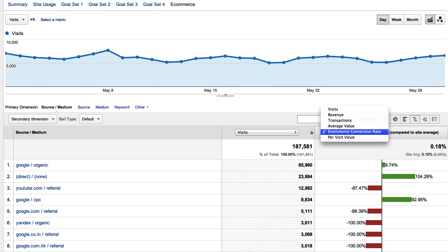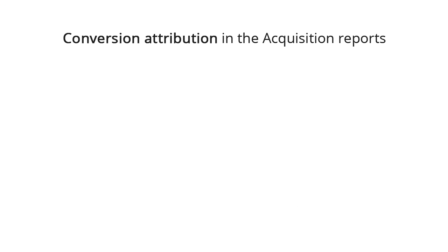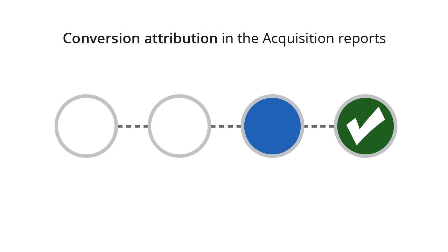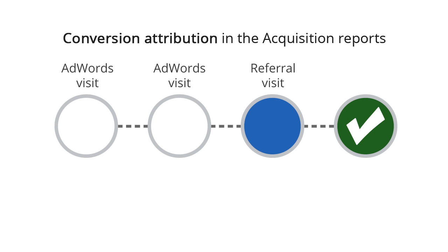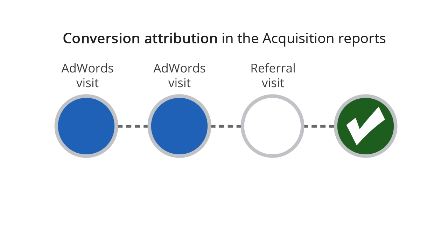In this case, we're looking at metrics on the e-commerce tab and comparing each traffic source's e-commerce conversion rate with the site average. Remember, by default, Google Analytics attributes a conversion or sale to the campaign that most recently preceded the conversion. For example, if a visitor clicks on an AdWords ad and then later returns via a referral to purchase something, the referral will get the credit for the sale. This information is important to keep in mind as you use the acquisition reports, since some traffic sources may be better at assisting conversions, while others may be better at closing conversions.